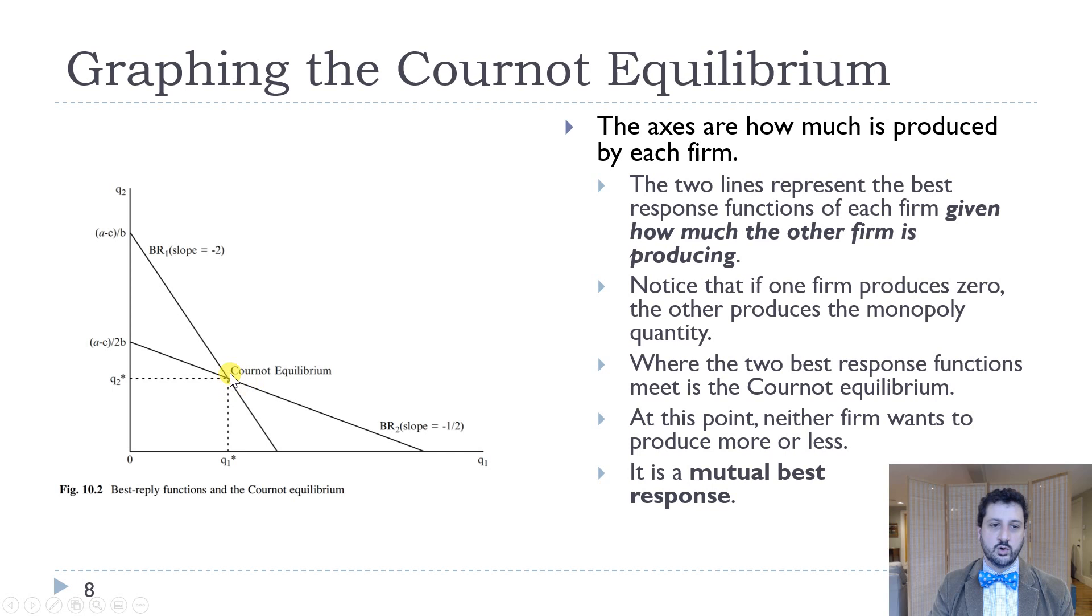The Cournot equilibrium is where those two intersect. And so what that means is that neither firm wants to produce more or less once they are at that point. That is the profit maximizing point. That said, remember, when we talked about collusion, if they could collude, then they would produce the monopoly output and then just split the profit because that's the maximum profit. You can never do better than the monopoly profit. But this is without collusion. This is a mutual best response without any type of collusion.